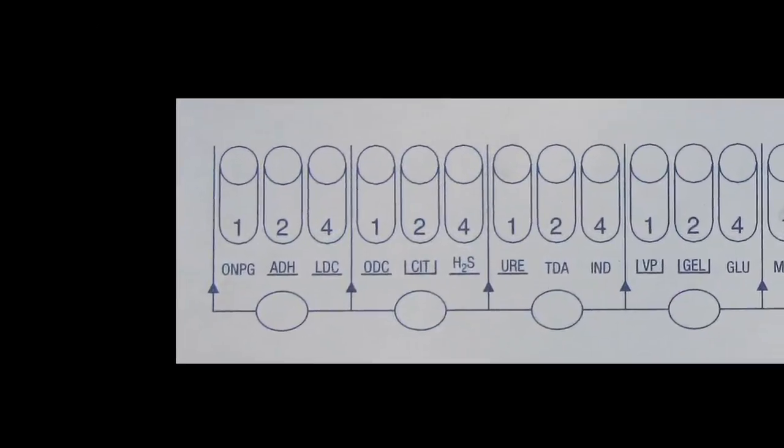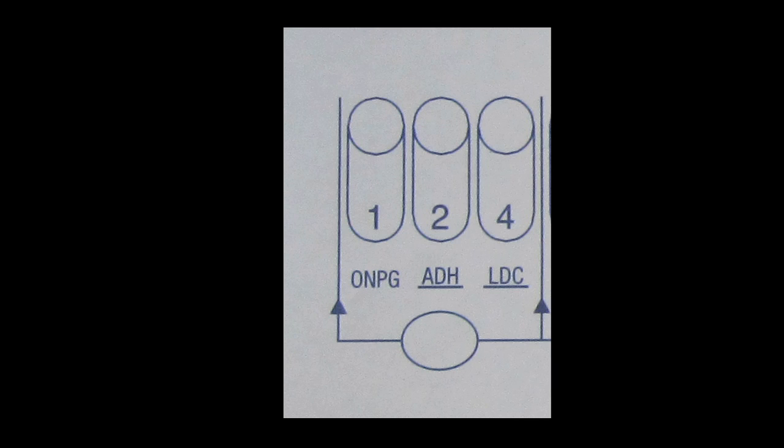On the result sheet, the tests are grouped in two sets of three. Each of those tests has an assigned value: 1, 2, or 4.